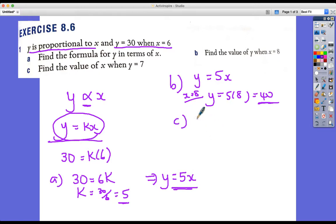And it's the same idea, just the other way around in part C. So find the value of X when Y is 7. Y equals 5X. This time Y is 7. It's 5X. So X would have to be 7 divided by 5. We take the 5 to the other side. 7 over 5 or 1 and 2 fifths, or 1.4. That's question 1 done.